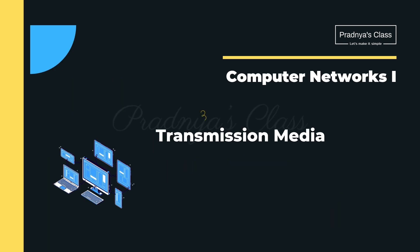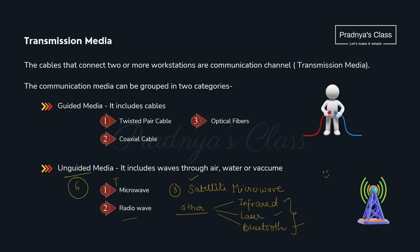Moving ahead to transmission media — it is categorized into two types: guided and unguided. There are three types of guided media: twisted pair cable, coaxial cable, and optical fiber. For unguided media, there are six types: microwave, radio wave, satellite microwave, infrared, laser, and Bluetooth.